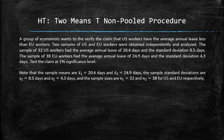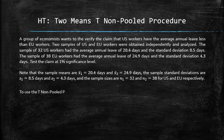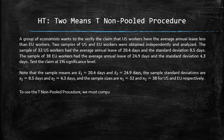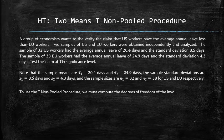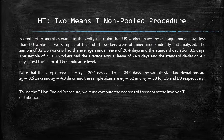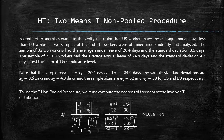To use the t non-pooled procedure, we must compute the degrees of freedom of the involved t distribution using the following formula. At the end, to make the answer an integer, we round down.